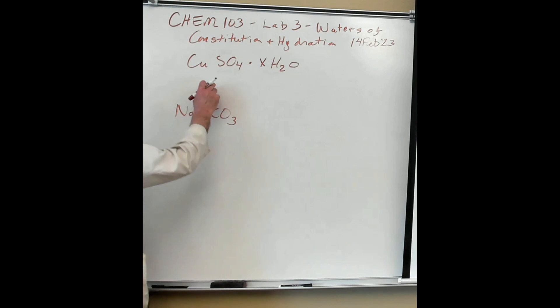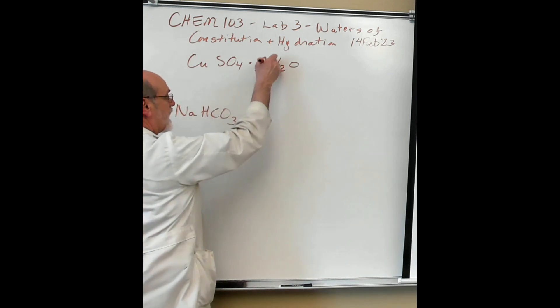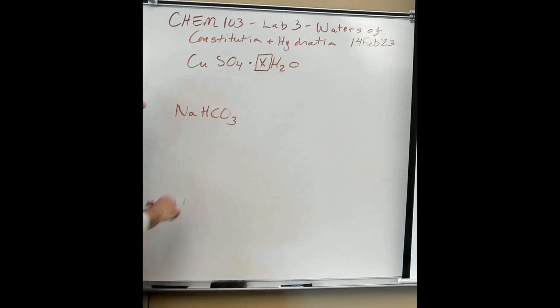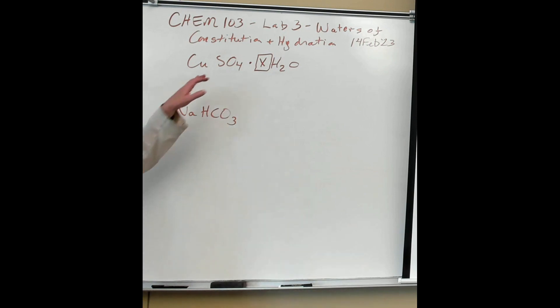What we want to find out about this one is, what is that x value? And remember, this is in terms of moles. So for every one mole of that compound, copper sulfate, we don't know how many moles of water are associated with it. You look on the bottle. When we go in the lab and look on the bottle, you'll see a number. But I want you to prove it with this experiment. What is that number?